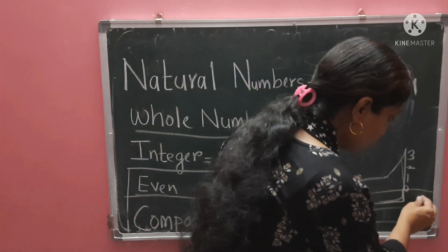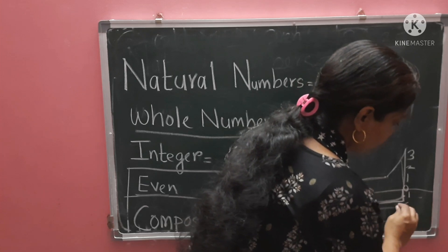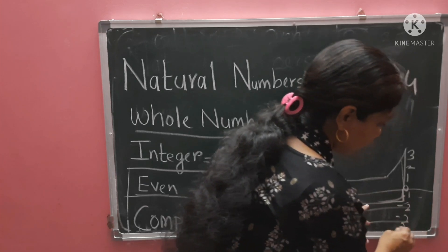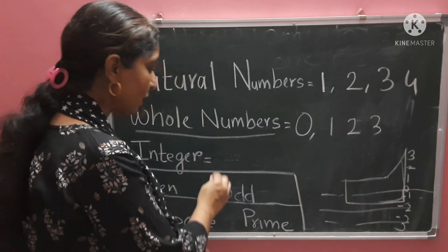So, I said, below sea level height, we count in negative. Minus 1, minus 2, minus 3. So, all the numbers which are positive and negative are called integers.